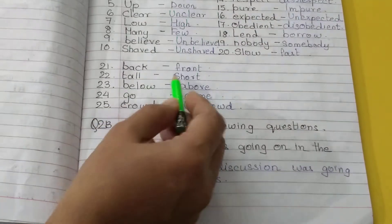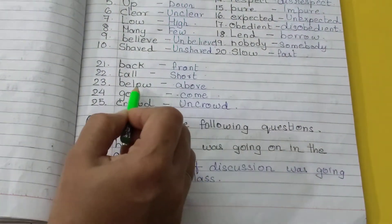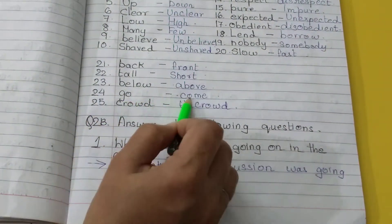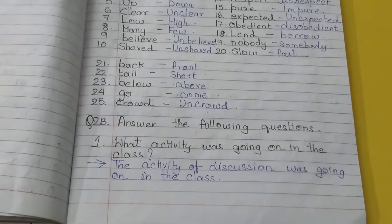Slow, fast. Back, front. Tall, short. Below, above. Go, come. Crowd, uncrowd. These are the opposites.